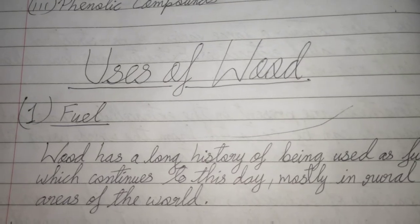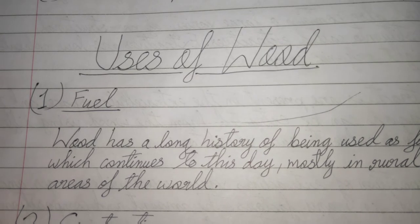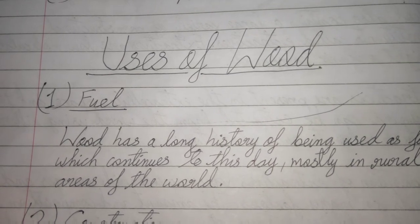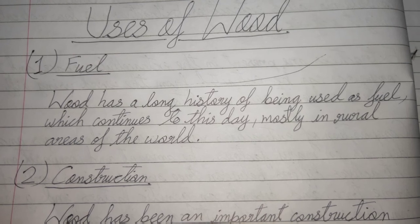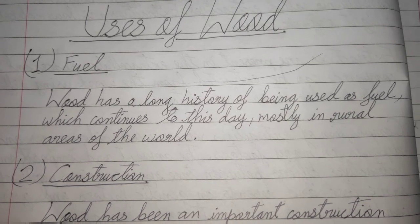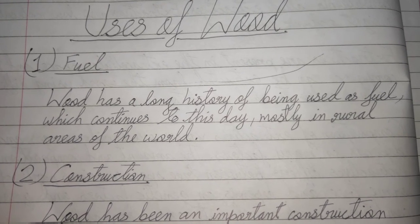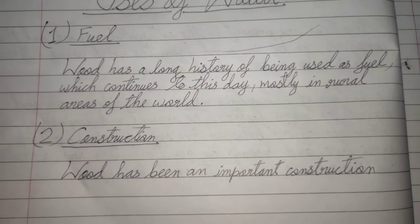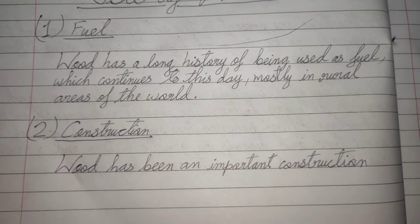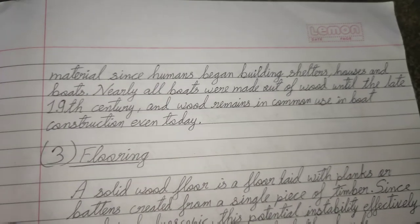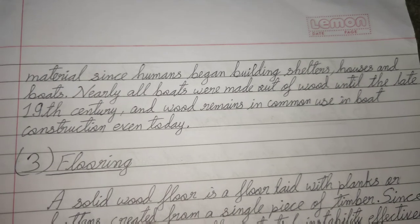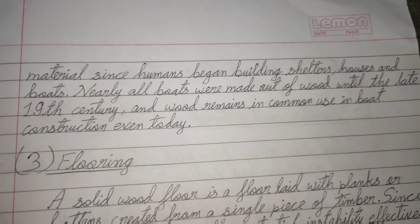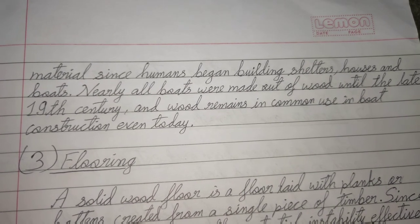Next we will learn about various uses of wood. First, wood is used as fuel; it has a long history of being used as a fuel, which continues to this day mostly in rural areas of the world. Second, wood is used for construction purposes. Wood has been an important construction material since humans began building shelters, houses, and boats. Nearly all boats were made out of wood in the late 19th century, and wood remains in common use in boat construction even today.